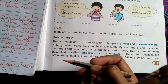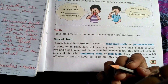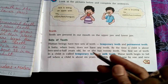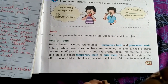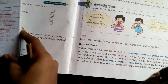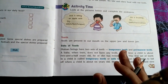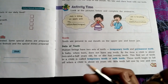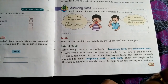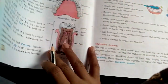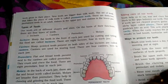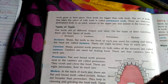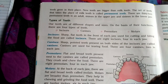The first set is temporary or milk teeth. The baby when born does not have any teeth; by the time the child is about two and a half years old, he or she has 20 teeth. These milk teeth start falling off around age five, six, or seven years, one by one, and their place is taken over by a new set called permanent teeth. Permanent teeth are bigger and stronger than milk teeth.